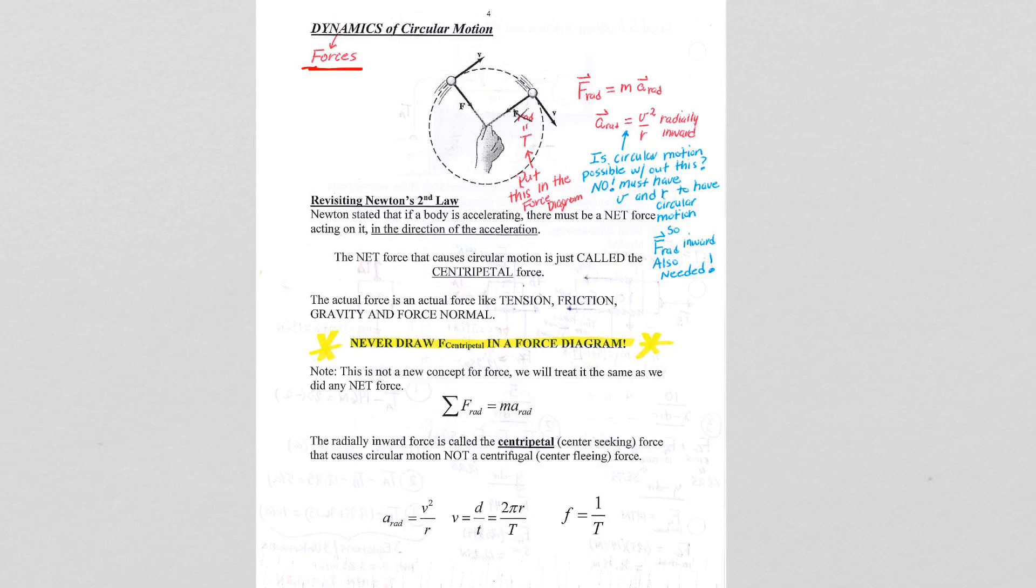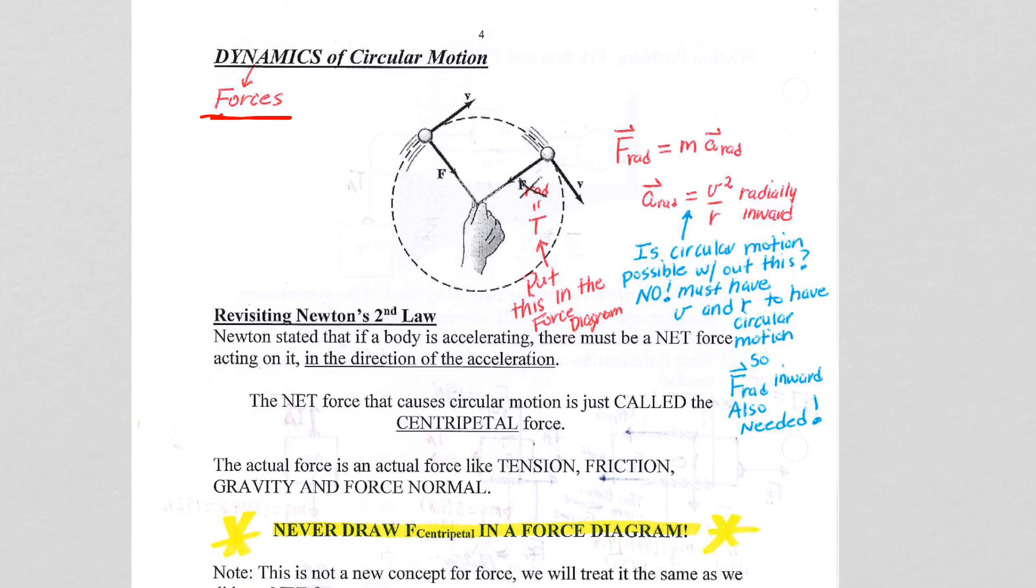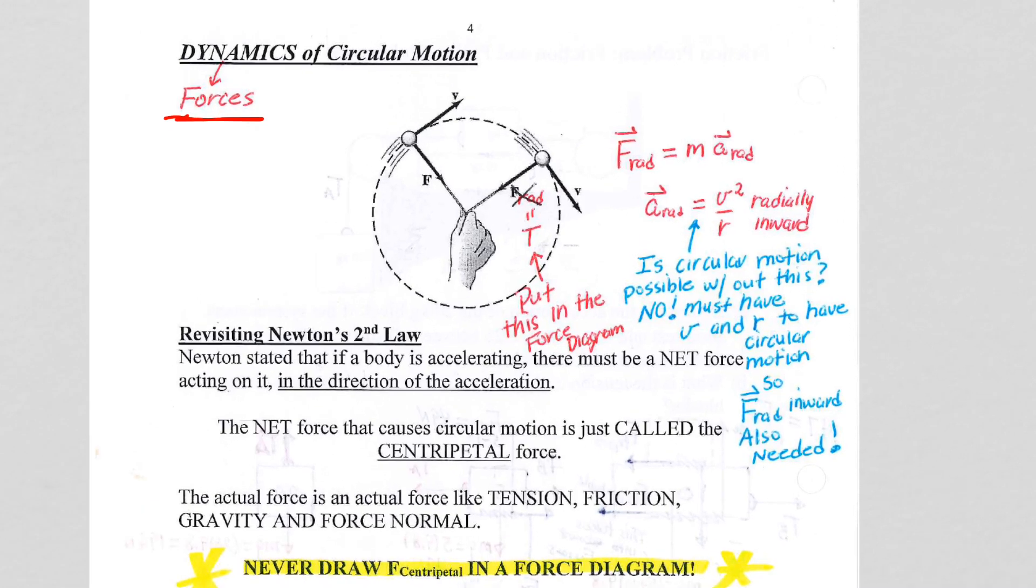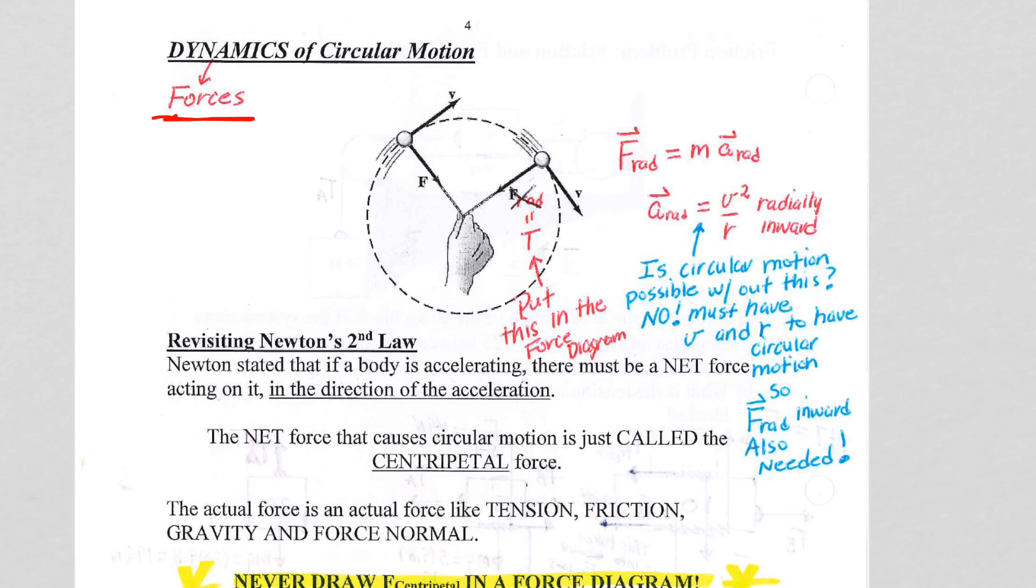In this case, the diagram here is showing you a mass attached to the end of a string, and it's being twirled in a circle, whether it's a perfectly vertical circle or the orientation of the circle doesn't really matter right now. But we have circular motion, so you have a radially inward acceleration, V squared on R, whenever you have circular motion.